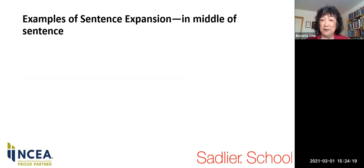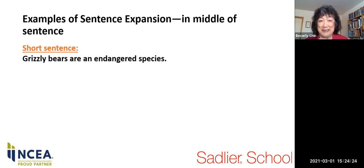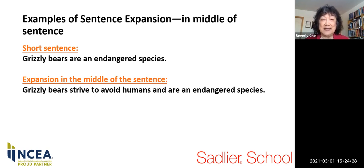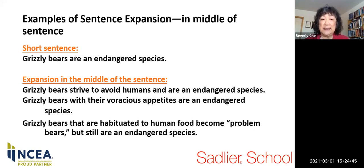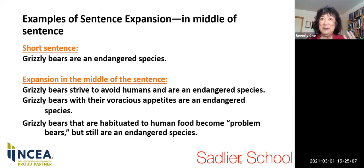Now we are adding information into the middle of a sentence: grizzly bears are an endangered species. 'Grizzly bears strive to avoid humans and are an endangered species.' 'Grizzly bears, with their voracious appetites, are an endangered species.' 'Grizzly bears that are habituated to human food become problem bears, but still are an endangered species.' My students love to debate the meaning behind each of these sentences and whether the writer is in favor or not in favor of keeping grizzly bears on the endangered species list. Students become better readers when doing sentence expansion and talking about purpose and audience.